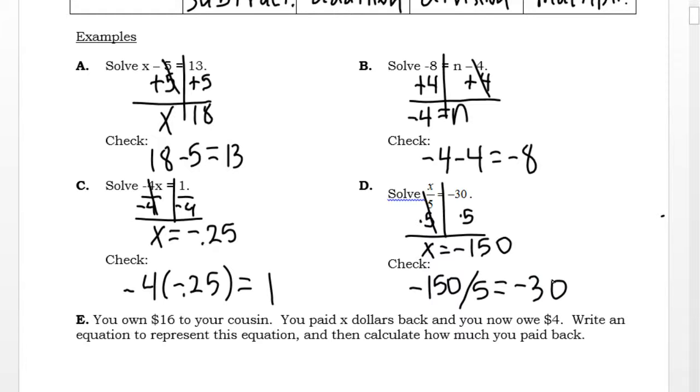So just four quick examples. Undoing addition with subtraction, subtraction with addition. Undoing multiplication with division. And division with multiplication.